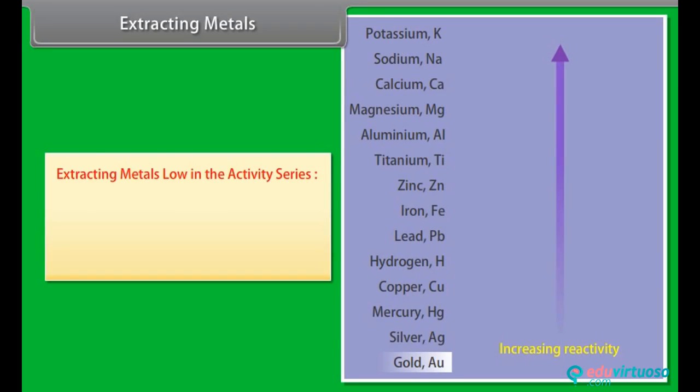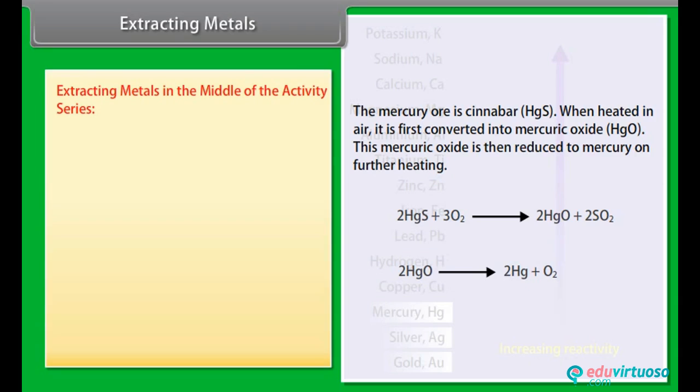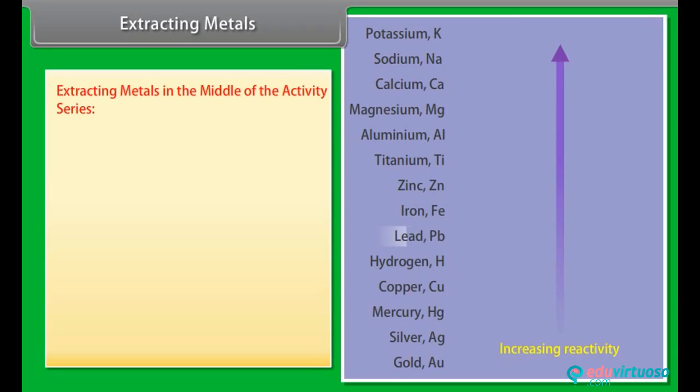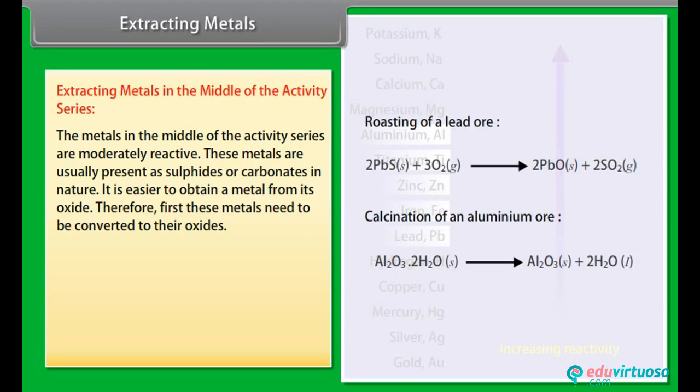Extracting Metals Low in the Activity Series: Metals that are low in the activity series are very unreactive. The oxides of these metals are reduced to metals by heating alone. Extracting Metals in the Middle of the Activity Series: The metals in the middle of the activity series are moderately reactive. These metals are usually present as sulphides or carbonates in nature. It is easier to obtain a metal from its oxide.